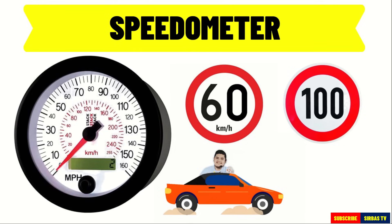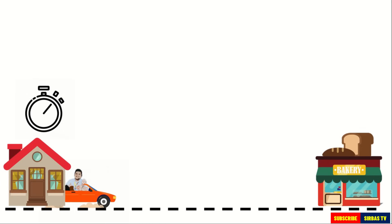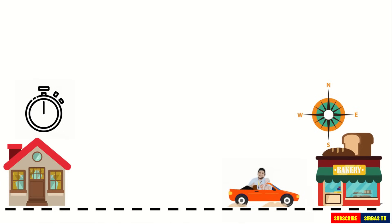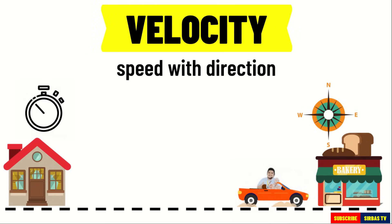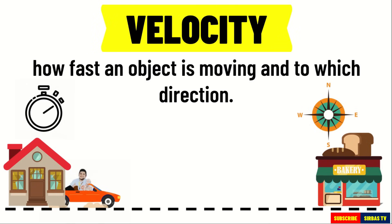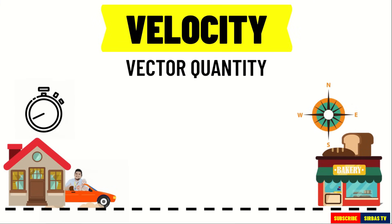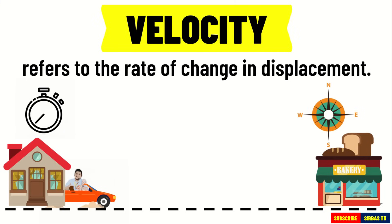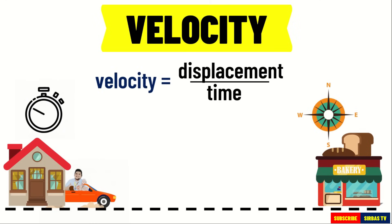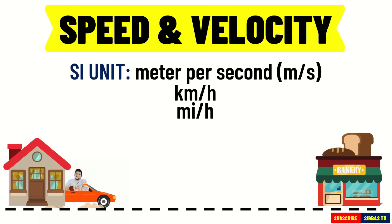In describing the motion of an object, we do not just describe how fast the object moves — we also consider the direction it is going. Speed with direction is referred to as velocity. It gives us an idea how fast an object is moving and in which direction. It is a vector quantity that refers to the rate of change in displacement. In equation form, velocity is equal to displacement divided by elapsed time. Speed and velocity have the same units; however, velocity requires direction.